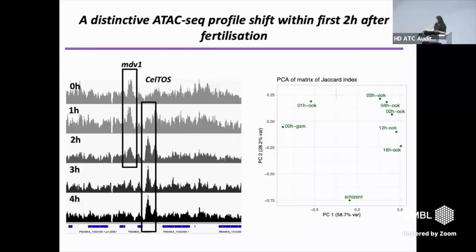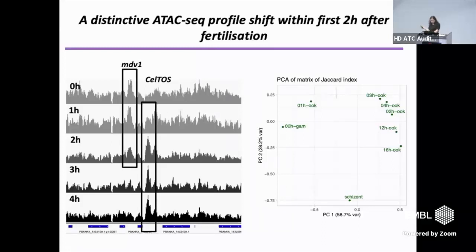While the changes in transcript expression were very gradual, the change in the ATAC-seq profile appeared very sudden — happening within the first two to three hours after fertilization. Looking at the similarity of global profiles using PCA, you start with early zygotes, move to early ookinete development, then there's a very big shift, and the profile remains essentially constant for the next 24 hours. This suggested that at the DNA level, something is binding there.